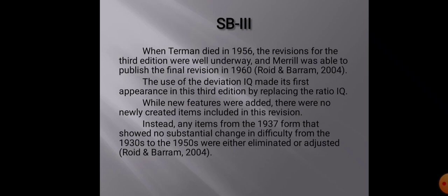The most important feature of SB3 was that the term deviation IQ appeared for the first time in this third edition. The ratio IQ — calculated by dividing the mental age by the chronological age and multiplying by 100 — had been used in SB1 and SB2. In SB3, this ratio IQ was replaced with the deviation IQ.